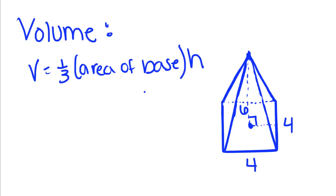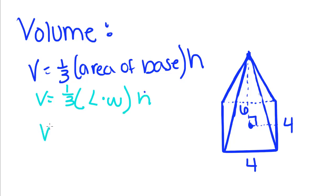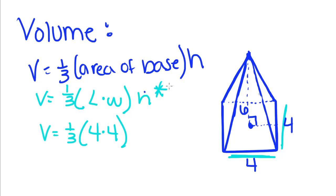The volume of a pyramid is equal to one-third the area of the base times height. The area of the base of a pyramid is equal to length times width. So for this pyramid, we have one-third times the length of the base, which is four, times the width of the base, which is also four, times the height. Remember, this height is the perpendicular height from the center of the base up to the apex — it goes from the top point down to the center of the base. Our height for this is six.